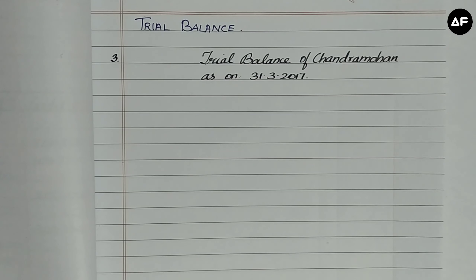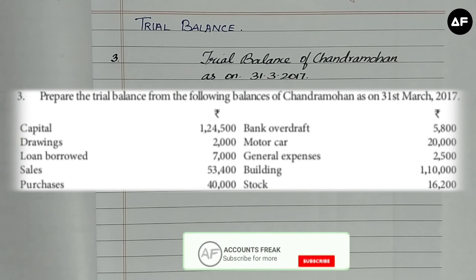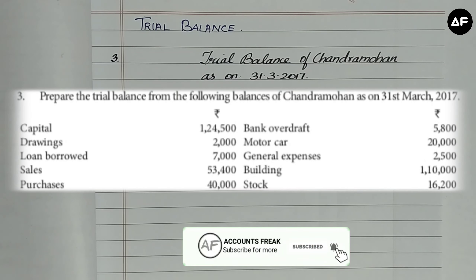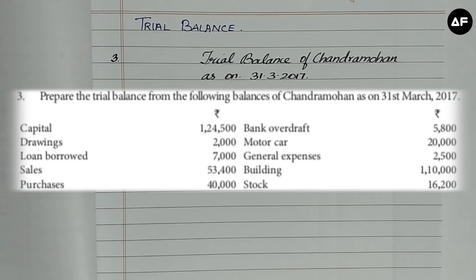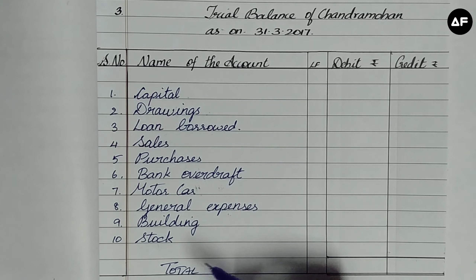In this video we are going to look into the third sum of standard Levin trial balance from the summer cheer textbook. This sum is about Mr. Chandramohan's trial balance as on 31/3/2017. It has 10 items relating to Mr. Chandramohan's ledger accounts, which are going to be listed into the trial balance and sorted out as debit and credit.